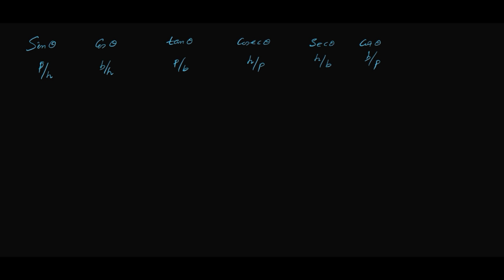Now, we will find out the values of trig ratios when theta is equal to 0°, 30°, 45°, 60°, and 90°. For all these values we will try to find the values of sin, cos, and all other trigonometric ratios — that is, sin 0°, sin 30°, sin 45°, sin 60°, sin 90°, and similarly for all the other ratios.